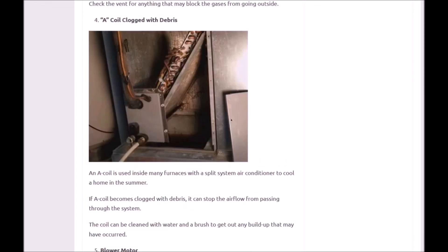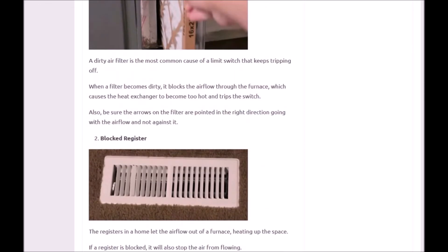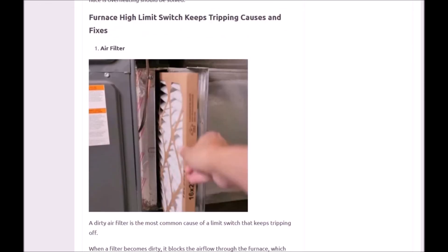So that's basically it. I just wanted to go over some of the main causes and fixes if you have a furnace high limit switch that keeps tripping and causing the furnace to shut down.